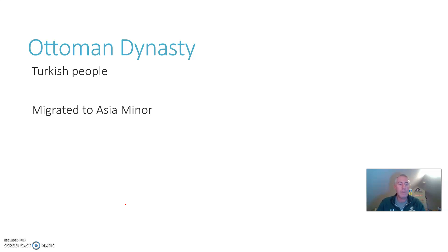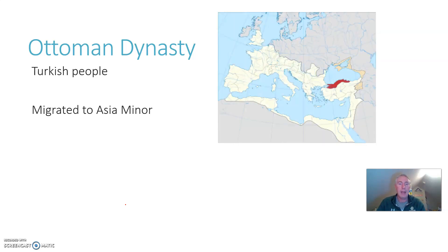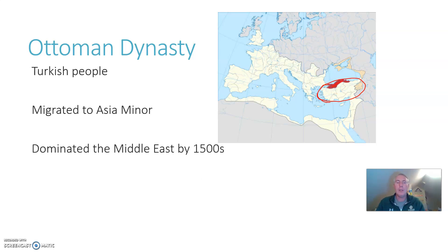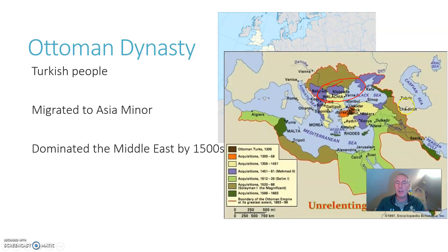These Turkish groups would often fight amongst themselves for control, and by the 1300s, a smaller Turkish group led by a guy named Osman had claimed the throne. His dynasty, the dynasty that he founded, would dominate the entire Middle East. Asia Minor — this red-shaded region — is the traditional homeland of the Ottomans, corresponding to what would today be modern-day Turkey. But they would eventually come to dominate the entire Middle East by the 1500s.